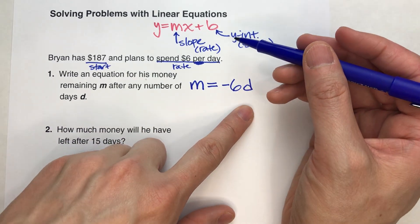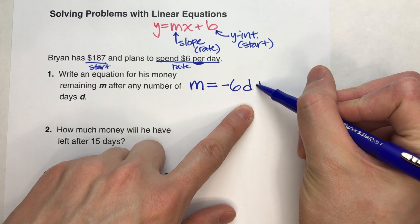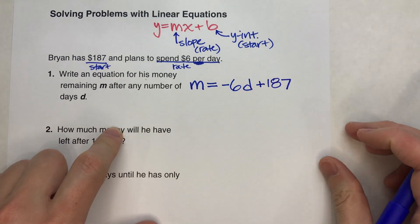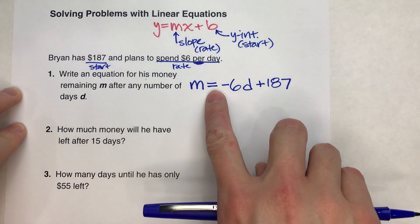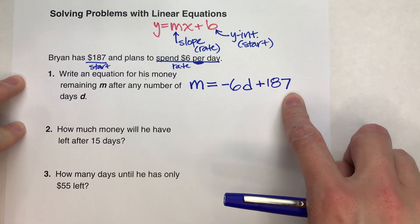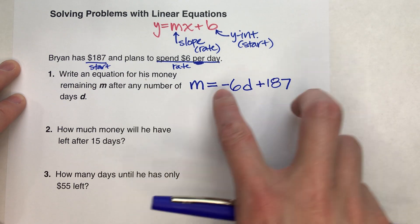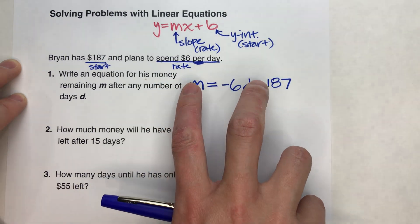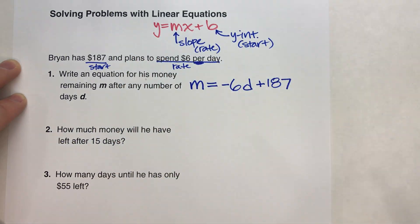And we need to add in how much we started with. So we're going to plus the $187 that we started with. And there's our equation: m equals negative 6d plus $187. And if you notice, it's very similar in format to y equals mx plus b. The only difference is we're using m and d instead of y and x.